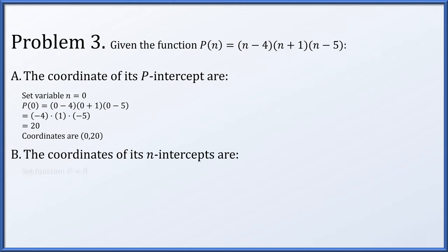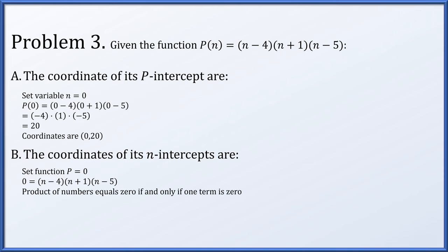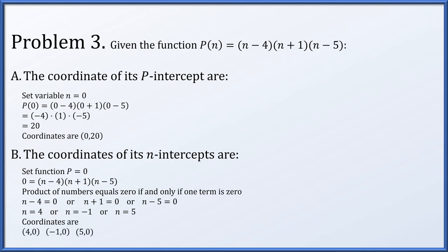What about the coordinates of its n-intercepts? We set p equal to 0: 0 = (n minus 4)(n plus 1)(n minus 5). This product equals 0 if and only if one of the terms is 0 — either n minus 4 = 0, n plus 1 = 0, or n minus 5 = 0. So n could be 4, or negative 1, or 5, giving coordinate pairs (4, 0), (negative 1, 0), and (5, 0).